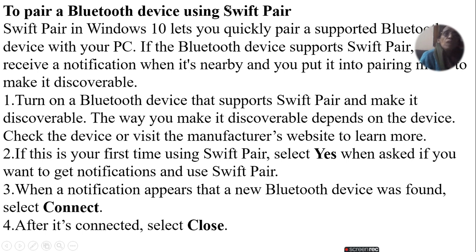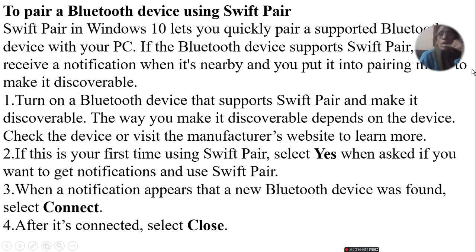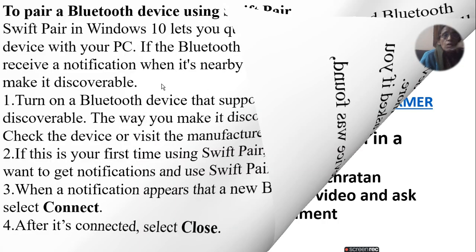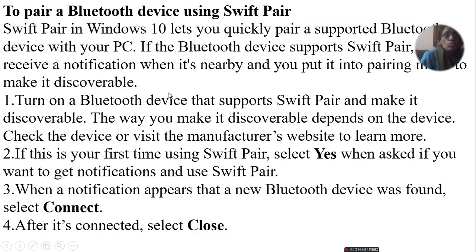To pair a Bluetooth device using Swift Pair: if the Bluetooth device supports Swift Pair, you receive a notification when it's nearby and you put it into pairing mode to make it discoverable. When you have a Swift Pair notification, you can connect to your device using that code.